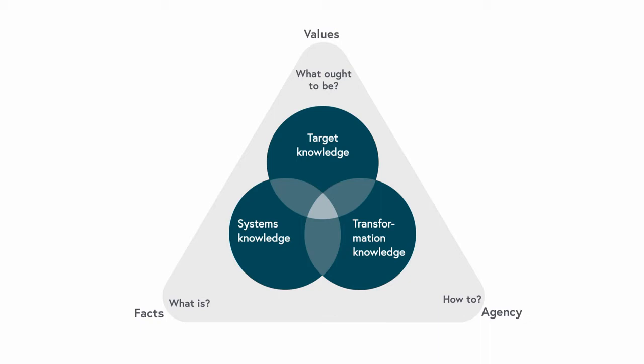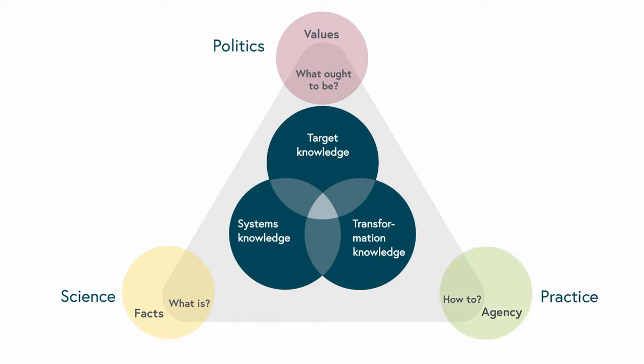We can further link the corners of the triangle to the different societal actors which have a higher legitimation in this field. The facts are in the sphere of science, with the scientists as most credible actors. The values and norms are generally in the sphere of political actors, with the public debate and the government as legitimized actors. Finally, agency is attributed to the sphere of practice, with practitioners knowing how things are done.